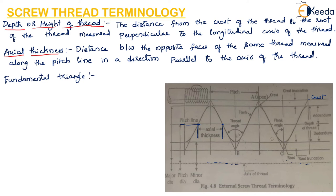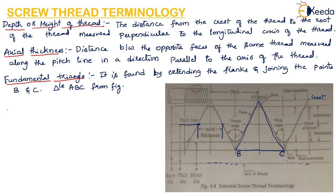When we extend the flanks to points B and C we obtain a triangle ABC, which is called the fundamental triangle. Crest or root truncation is the radial distance from the crest or root to the nearest apex of the fundamental triangle. So the distance between the crest and the apex of the triangle gives the crest truncation.